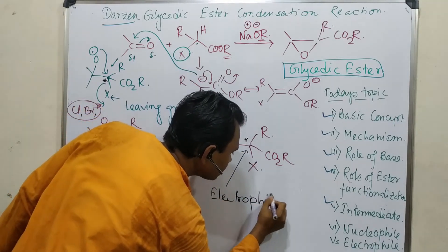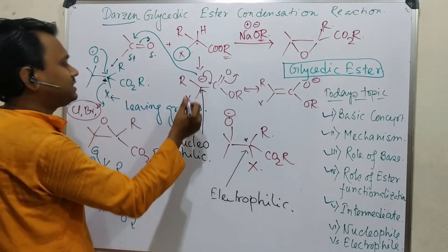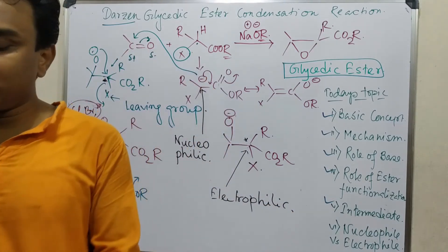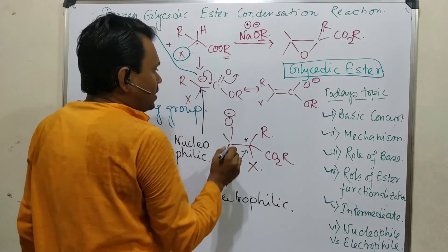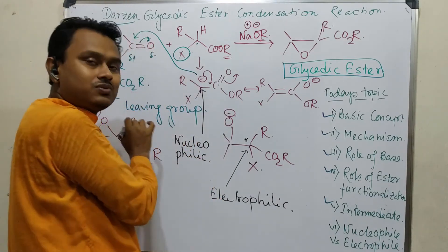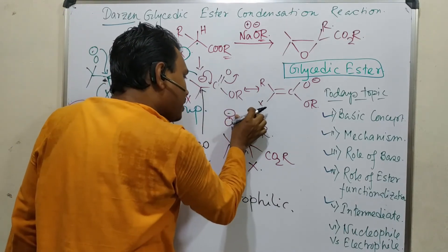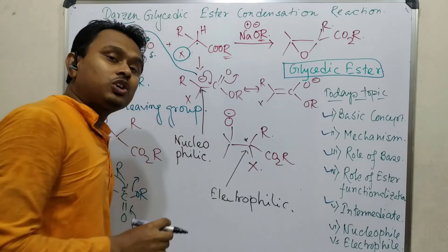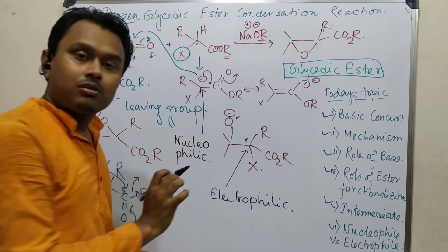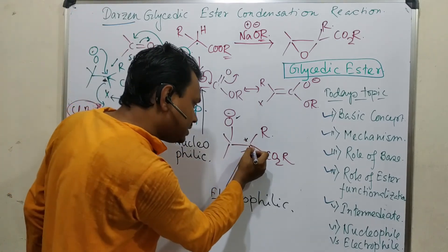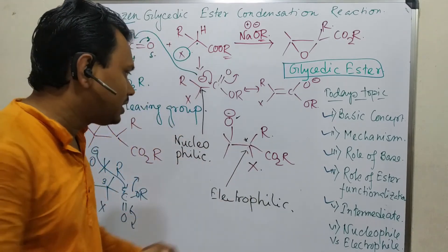But when it reacts, this charge is consumed and charge went on a relatively more electronegative oxygen atom. So right now it is not that much nucleophilic. And another thing, no anion is there - how could it act? But it's attached with a halogen and we know halogens are more electronegative.